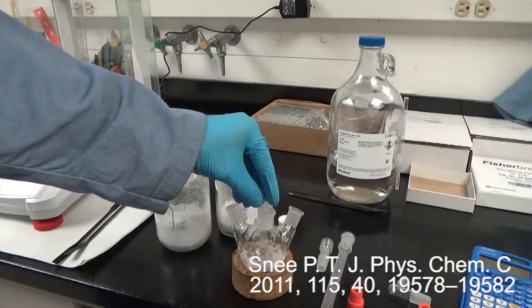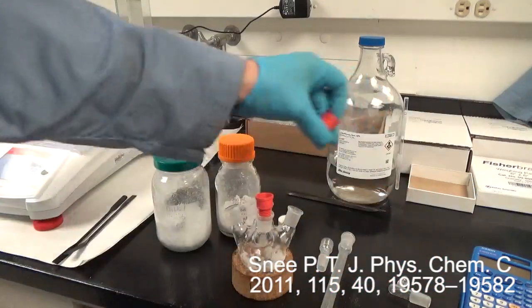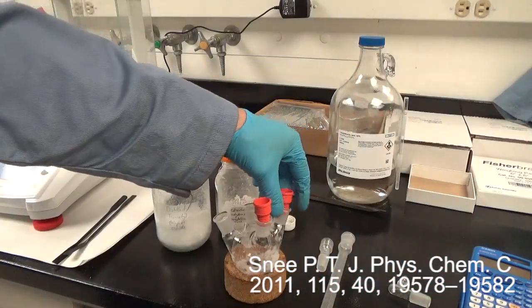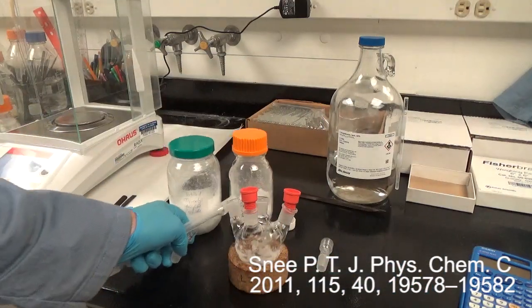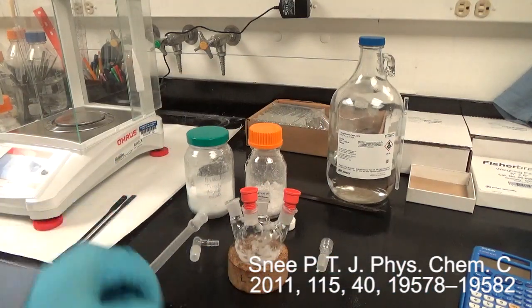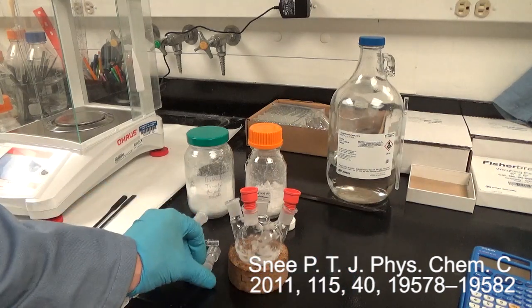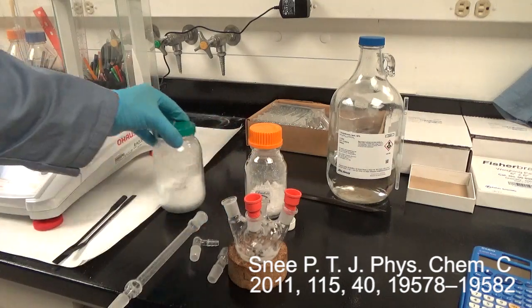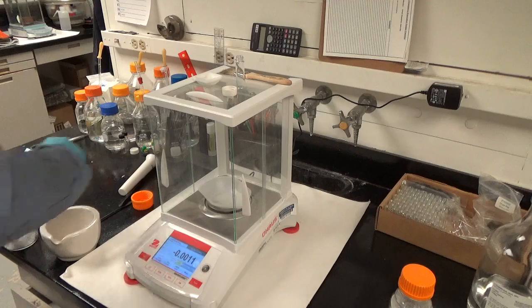Okay everyone, today we are going to overcoat cadmium selenide quantum dots in this four-neck round bottom flask. We have four ports: two for injecting precursors with septa, one for our nitrogen-vacuum connection, and one for the thermocouple temperature connection. Here are the chemicals we're going to use: TOPO, tetradecylphosphonic acid.